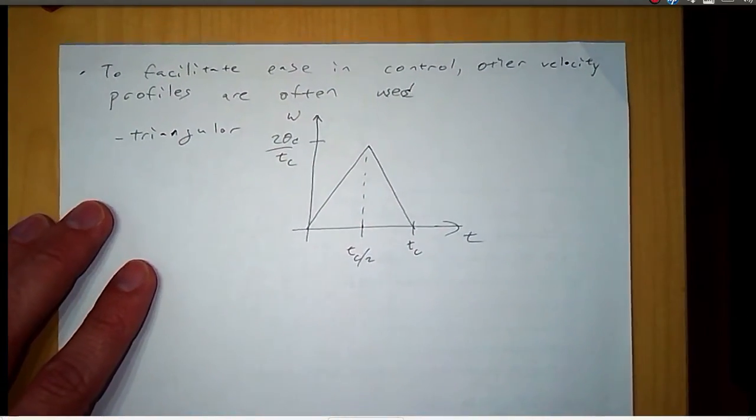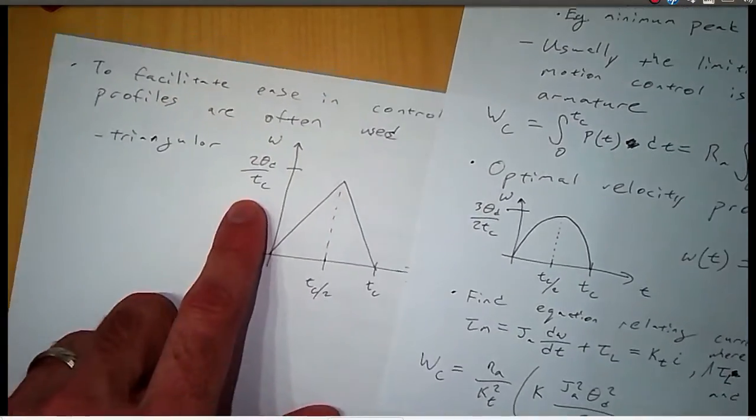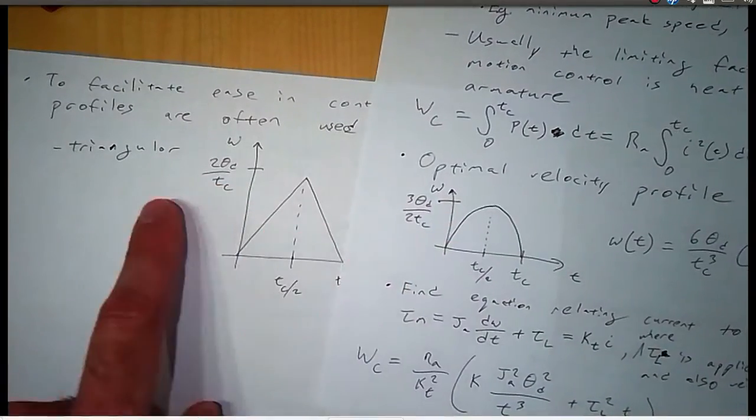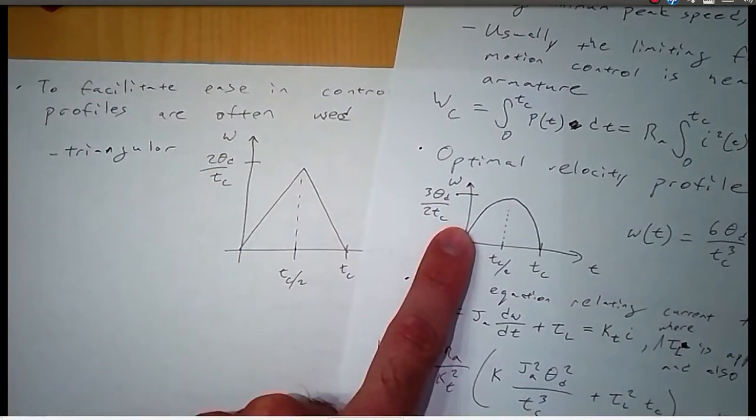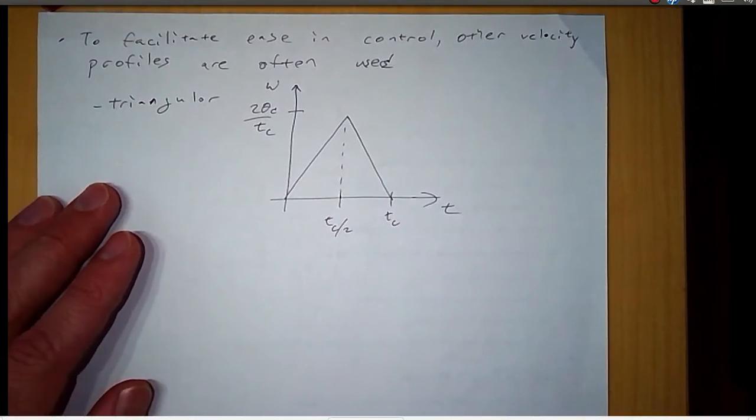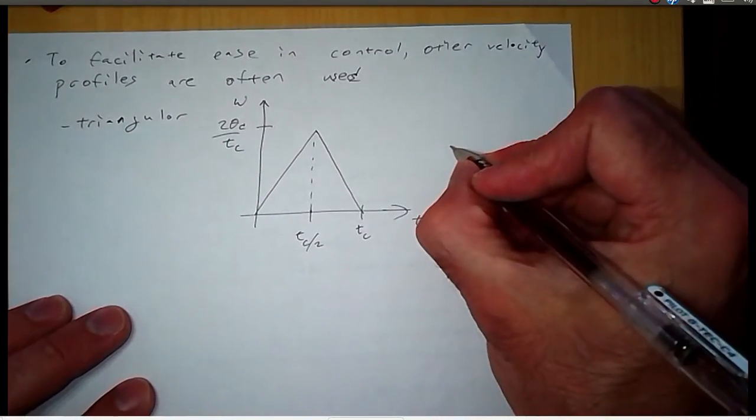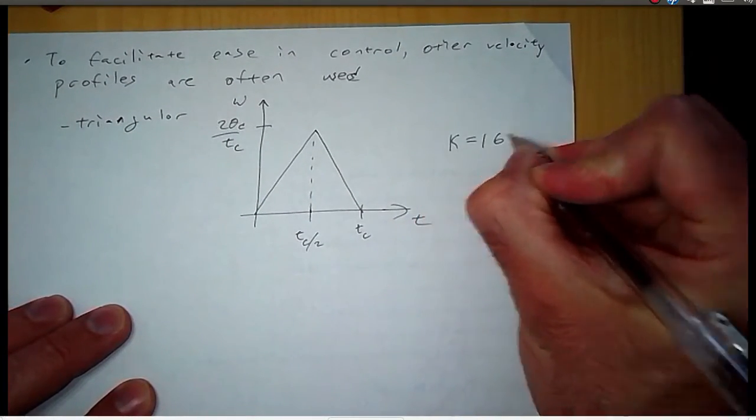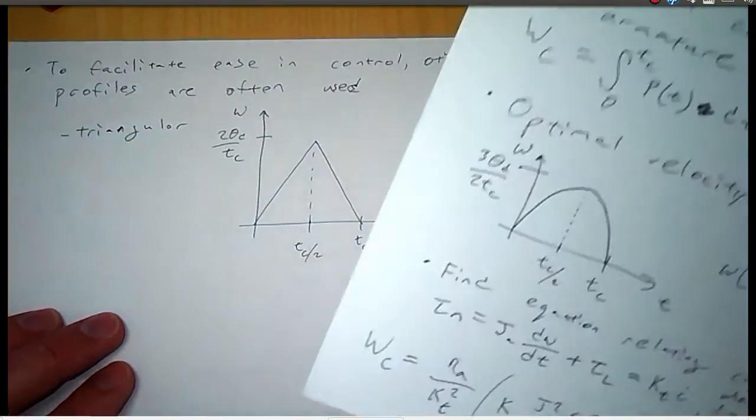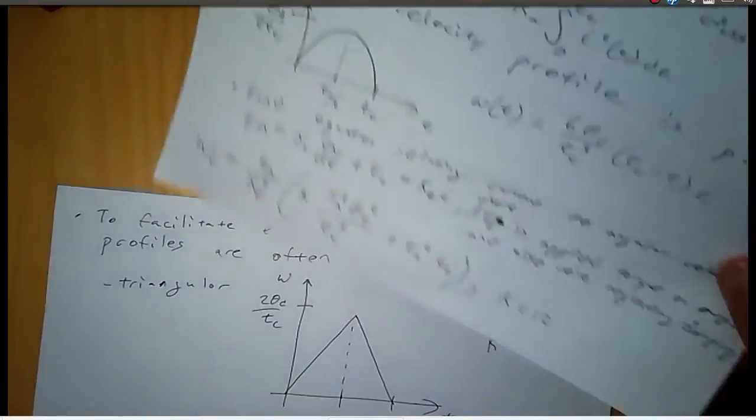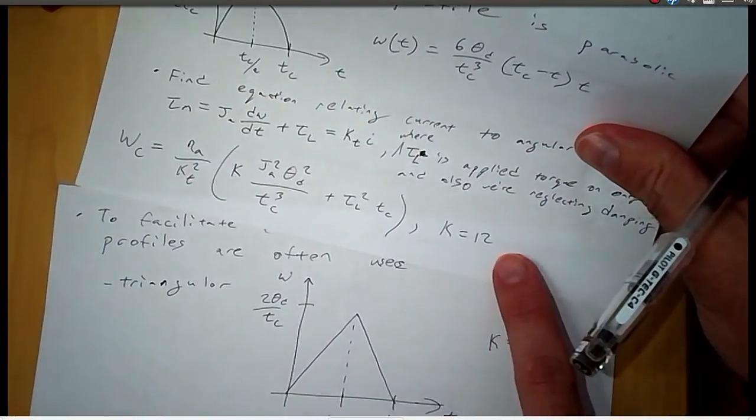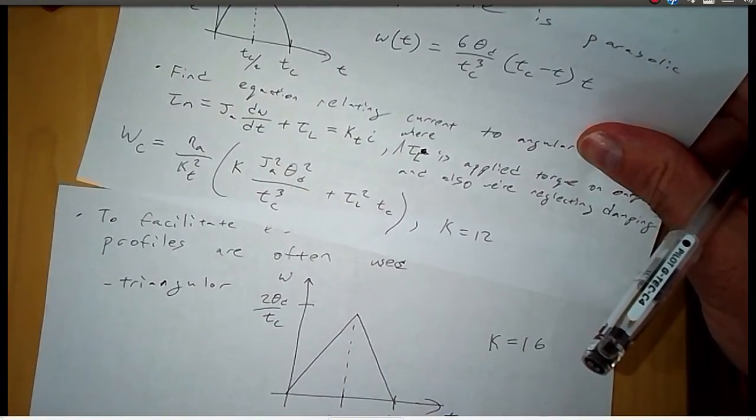And the maximum speed here is two times theta D over T C. You can see the difference between that and the parabolic profile. So this is a higher maximum velocity than this does. And for this case, we get K is equal to 16. So for the triangular velocity profile, we have to dissipate more energy than with the parabolic velocity profile.